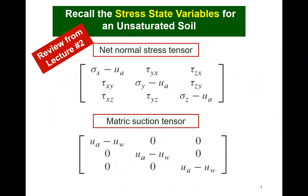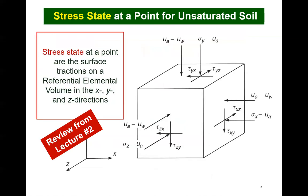You may recall from lesson number two that two independent stress tensors must be taken into consideration when describing the physical behavior of an unsaturated soil. One tensor could sustain shear stresses and it was called the net normal stress tensor. The other tensor was called the matrix suction tensor, or simply the suction tensor. The suction tensor was isotropic in nature because it was the difference between two isotropic stresses, namely pore air pressure and pore water pressure. The stress state variables were presented in the form of a three-by-three matrix or a tensor. The tensor designation is important because we live in a three-dimensional world.